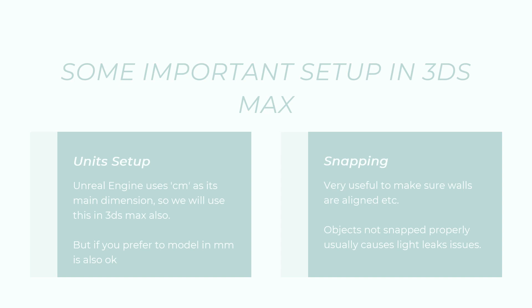Some setup in 3D Studio Max is pretty important. In Unreal Engine, centimeters are used as the main dimension, but in 3D Studio Max some professionals use millimeters. I model in millimeters, but when I use Unreal Studio or Datasmith to bring it into Unreal Engine, it converts them to centimeters automatically. If you're not using Datasmith, my experience is to model in centimeters — it's a lot easier. I'll go through snapping again when we start the actual modeling, since a lot of light leaks and light issues happen in Unreal Engine because snapping wasn't done properly and things aren't snapped to the ground.